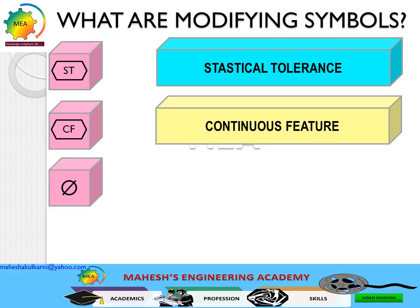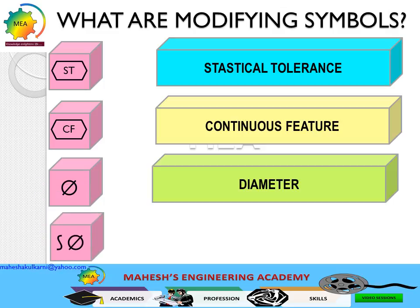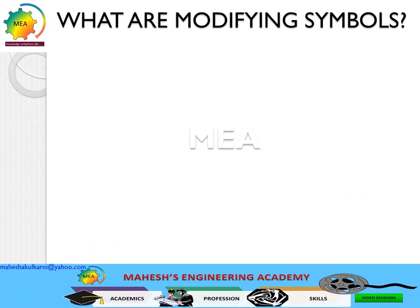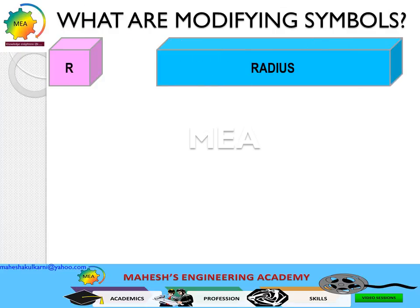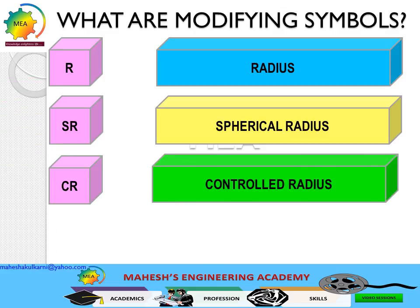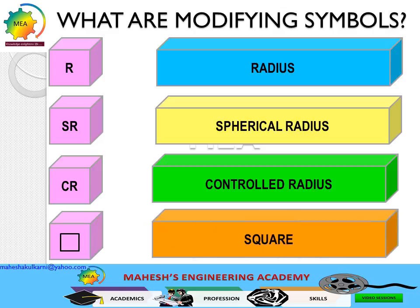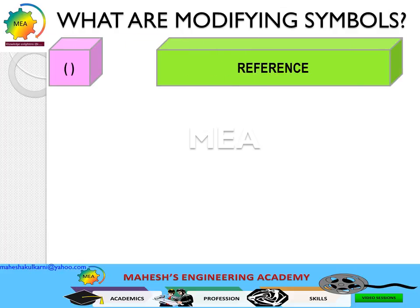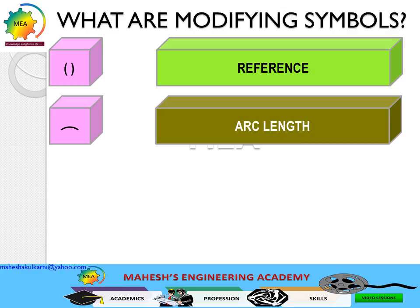The diameter symbol is a widely used symbol to represent circular geometry. The spherical diameter symbol is used to represent a spherical diameter. R is the widely used symbol for radius. SR stands for spherical radius. CR stands for controlled radius, where flats and reversals are not allowed. The square symbol is used to represent a square geometric shape.